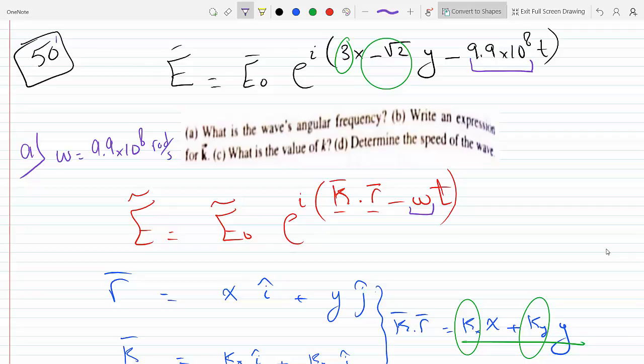Now the frequency - if I want to answer part a here - is omega over 2π. And so this would be 9.9 times 10^8 over 2π hertz for frequency.